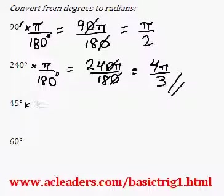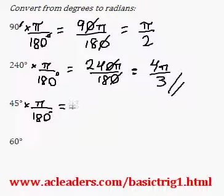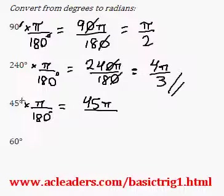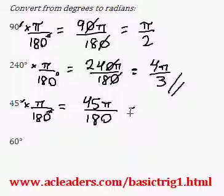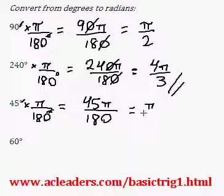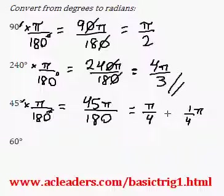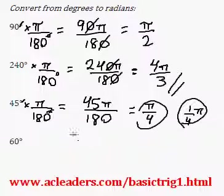Let's convert 45 degrees into radians. We multiply by pi over 180 — let's get rid of the degrees right away, it's just a formality. 45 over 180 is a quarter, and a quarter times pi is pi over 4. Because it's a quarter times pi, and pi multiplied by 1 is just pi, so pi over 4 is the answer.